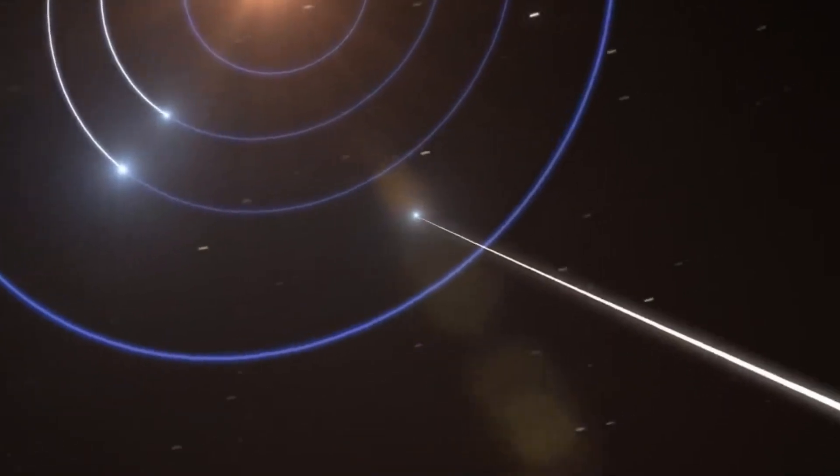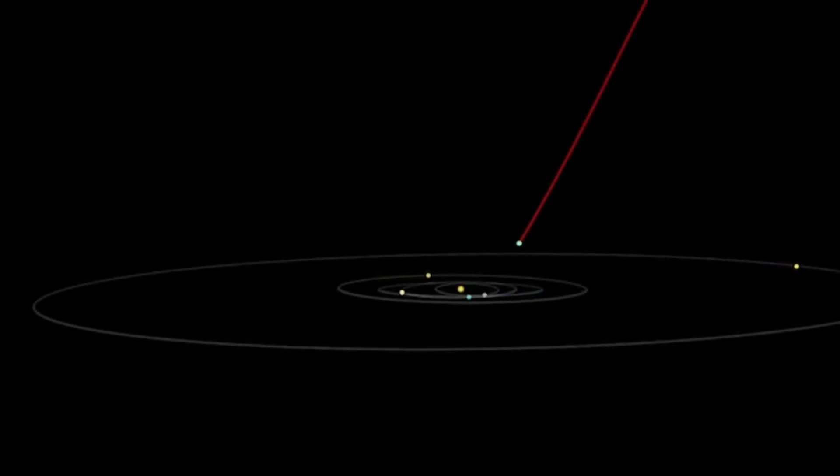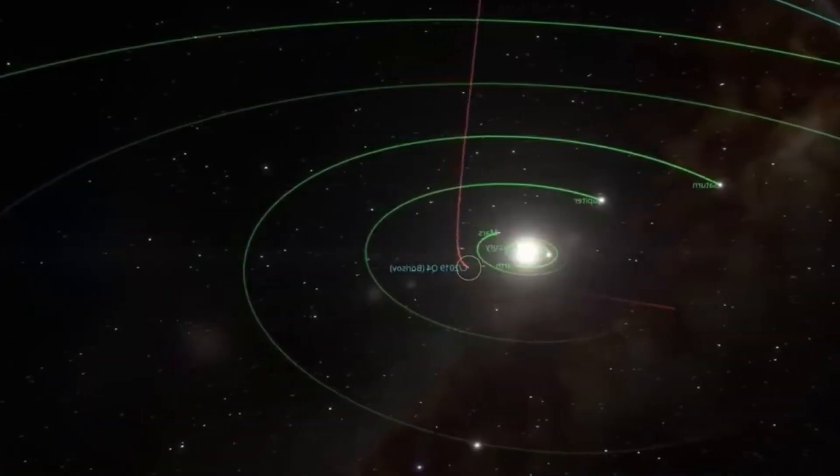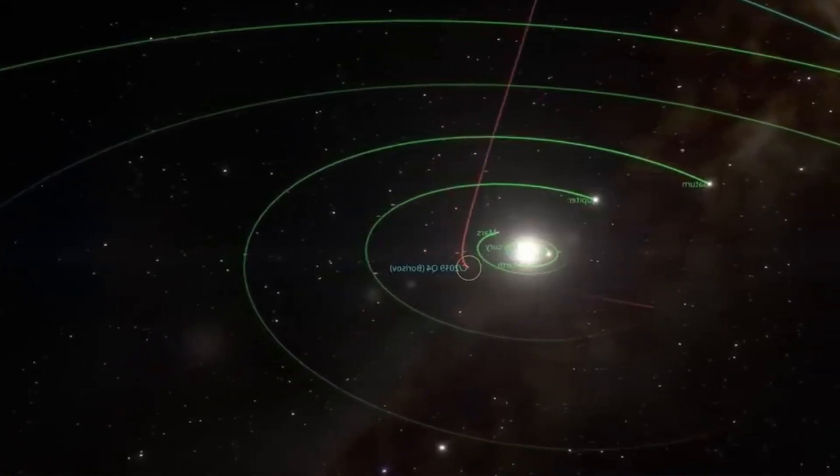The hyperbolic trajectory of the object, indicating its rapid approach towards the sun, resulted in the sun's gravitational influence causing a slight deflection in Oumuamua's path, rather than capturing it in a closed orbit.